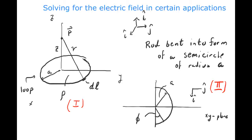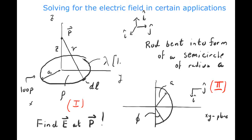We have this rod bent into the form of a semicircle of radius A, and what I want to do is find the electric field for the semicircle at point P. This rod is going to be very thin — we're going to neglect any structure in the rod. It has width of zero, but it's going to have a linear charge density of lambda.